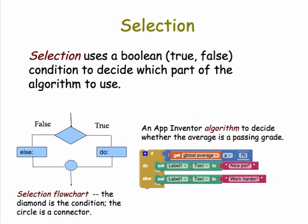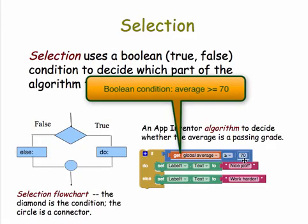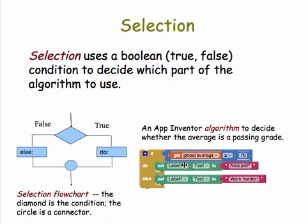Here's an example of a selection from App Inventor. We use the if-else block, which you've used many times already in your apps. In this case, we test if the global average is greater than or equal to 70. That's our Boolean condition. That expression is either going to be true or false. If it's true, we'll do this part. The do part says set the text and the label to nice job. Else, we'll do this part, which sets the text and the label to work harder.